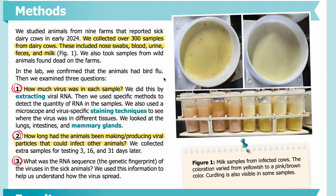In the lab, we confirmed that the animals had bird flu. Then we examined three questions. First, how much virus was in each sample? We did this by extracting viral RNA, then used specific methods to detect the quantity of RNA in the samples. We also used a microscope and virus-specific staining techniques to see where the virus was in different tissues — including the lungs, intestines, and mammary glands. Second, how long had the animals been producing viral particles that could infect other animals?